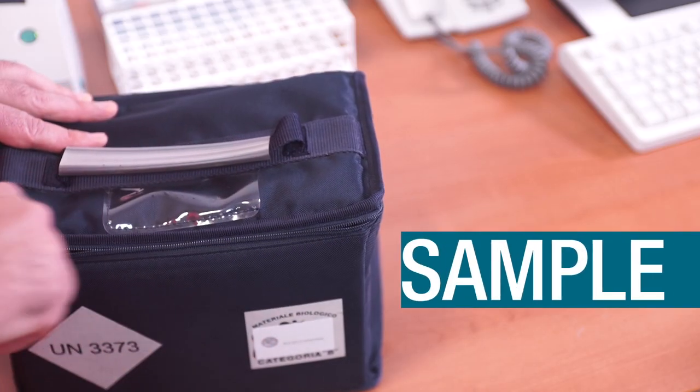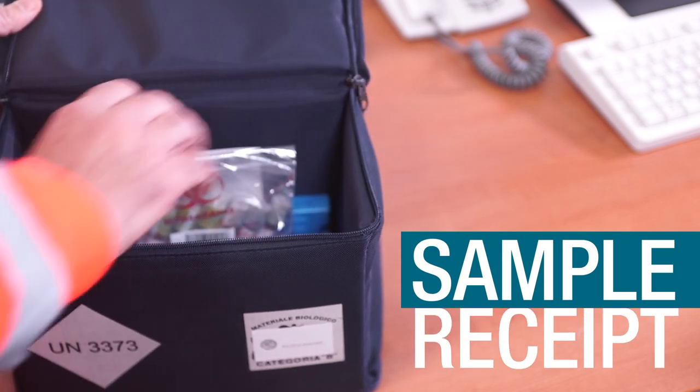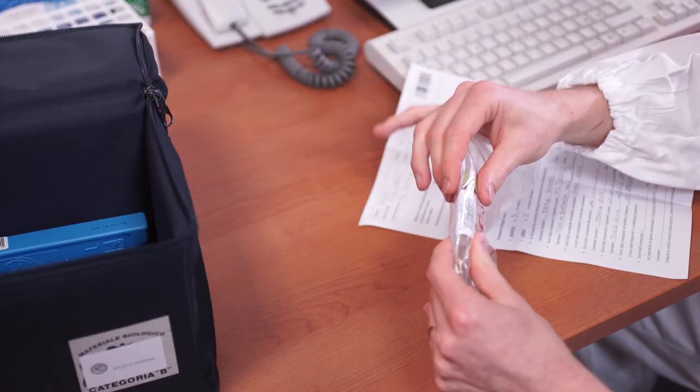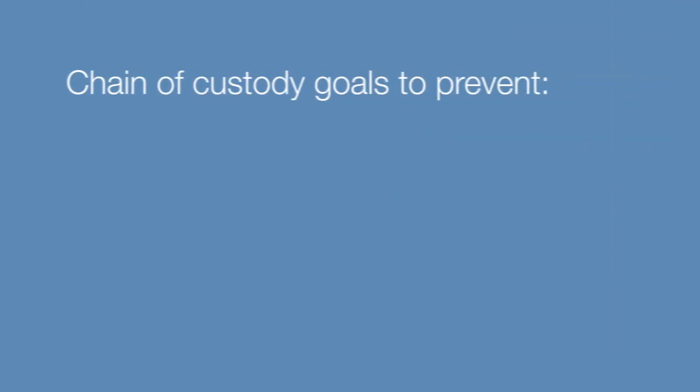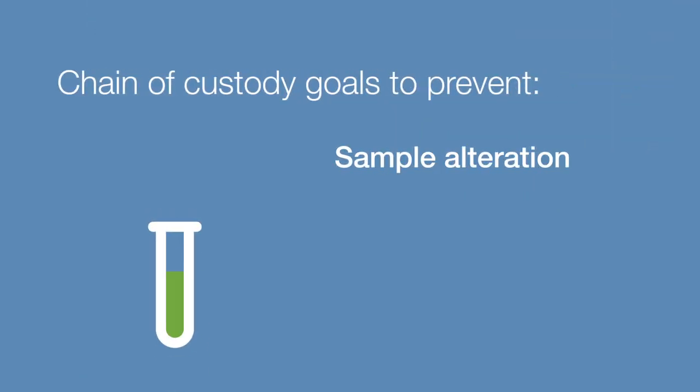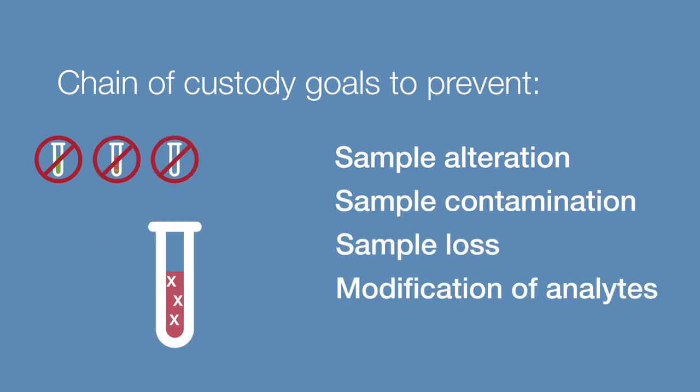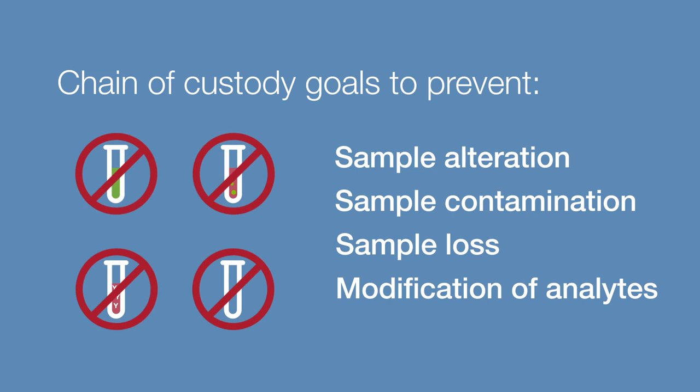Chain of custody is established when samples are collected and is maintained during the entire analytical process. The goal is to prevent alteration, contamination, loss of sample, and modification of analytes during handling and storage.